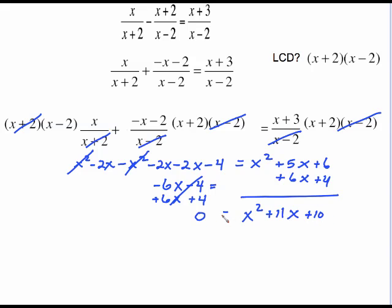The whole purpose in getting everything on one side equal to zero is so that I can factor. So x squared I'm going to have to have x and x in the front. These signs are all positive so both of these are plus. What multiplies to give me 10 that adds to give me 11 is 10 and 1. And this is equal to zero which is where I get to use the zero products property and set these two things up.